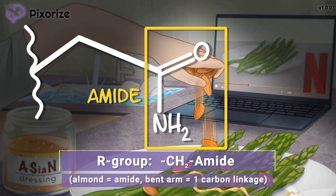What's more, you're holding these almonds in your hand with your arm bent at the elbow. This should help you remember that asparagine's R group consists of an amide at the end of a one-carbon bridge, because the almonds at the end of your bent arm kind of looks like the amide at the end of a one-carbon chain.